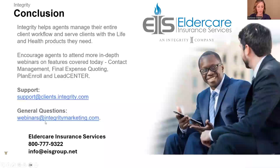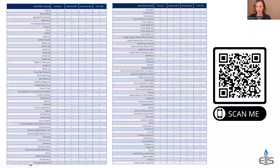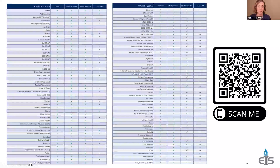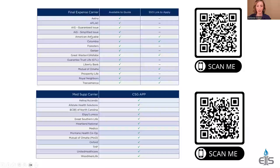Here are the Medicare Advantage carriers, which you can always find in the Learning Center on integrity.com. There will likely be new carriers added for the upcoming AEP. Here are the existing Medicare Advantage carriers available. Here are the final expense carriers and Medicare supplement carriers. These lists are specifically for the carriers where you can do the full enrollment on this platform — you can always quote all carriers, but these are the ones where you can do the full application process.